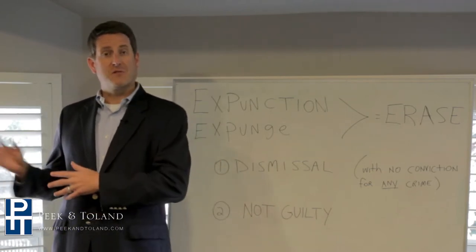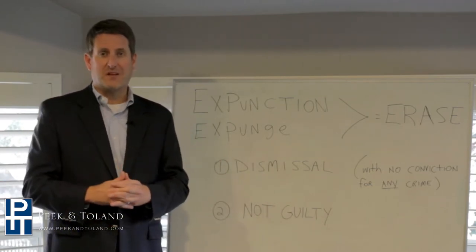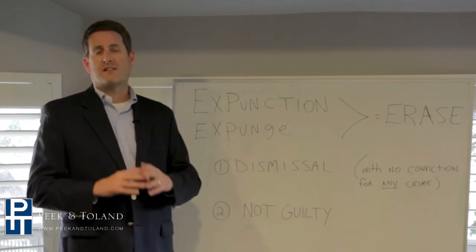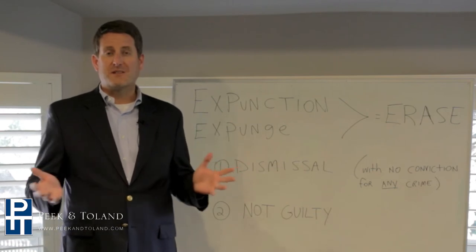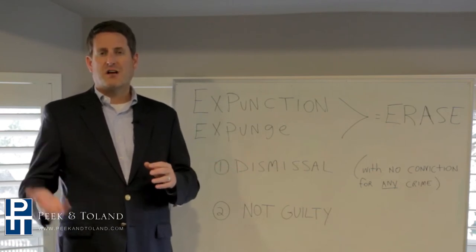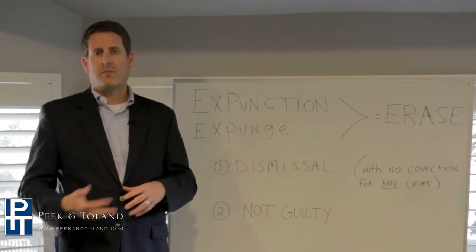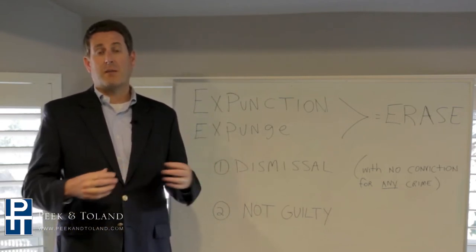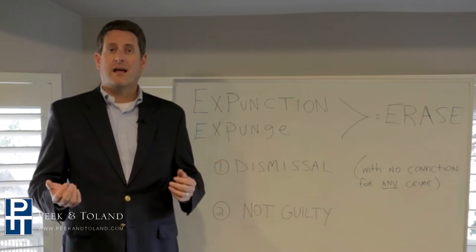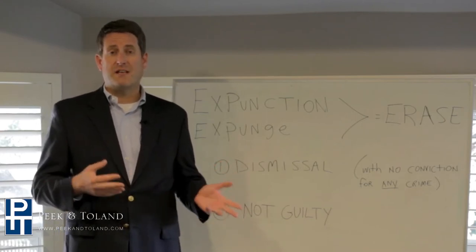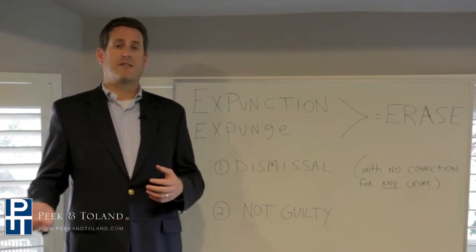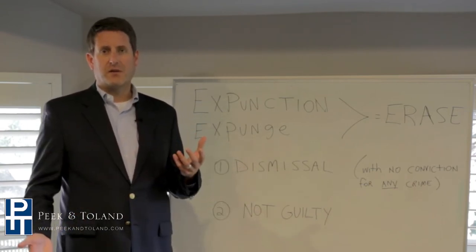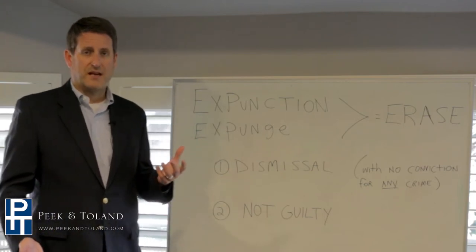Deferred adjudication is a different process called a motion to seal records. We're talking about what lawyers call a straight dismissal — meaning there was no reduction of charges and no lesser punishment involved. The charges were completely dropped and that was it. For example, if you were charged with DWI and they agreed to dismiss the DWI but then you had to plead to reckless driving or obstruction of a passageway, you would not be able to expunge the DWI because you took a plea deal on a lesser case.